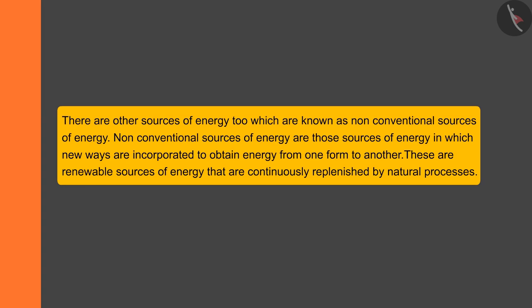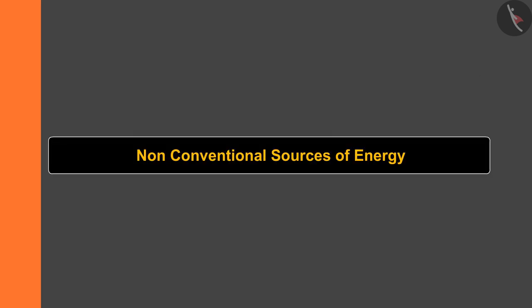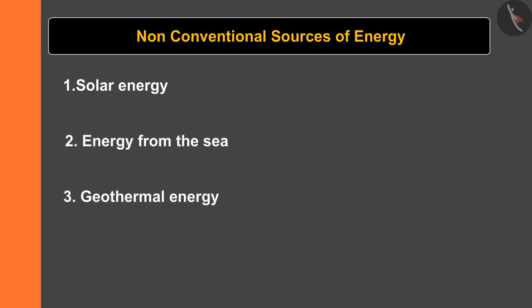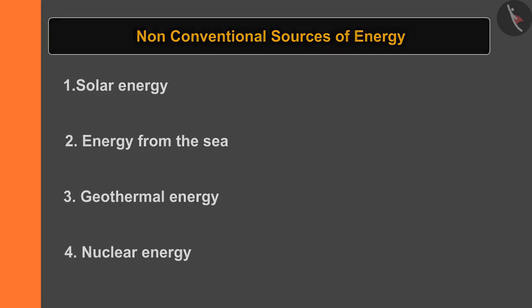Non-conventional sources of energy are those sources in which new ways are incorporated to obtain energy from one form to another. These are renewable sources of energy that are continuously replenished by natural processes. They are majorly of four types: solar energy, energy from the sea, geothermal energy, and nuclear energy. Let's understand each source one by one.